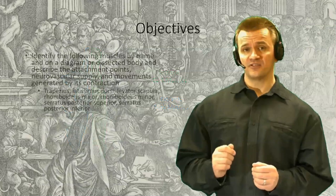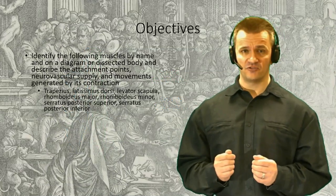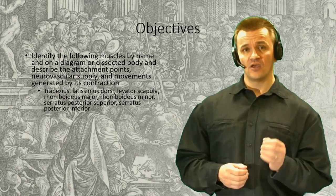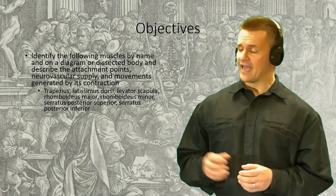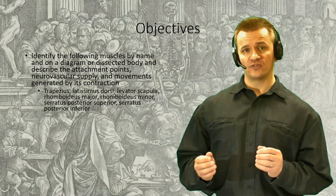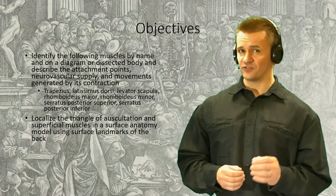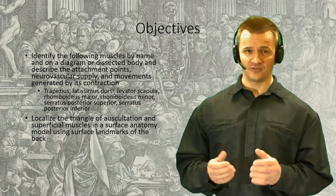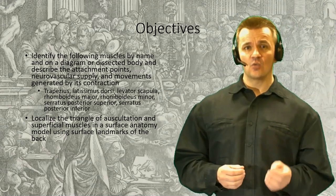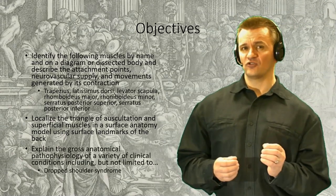On the completion of this session, you should be able to recall the names of the extrinsic back muscles and identify them in a picture or a dissection, and describe their origin, insertion, their neurovascular supply, and the movements that they generate during contraction. You should also be able to use surface landmarks to localize these muscles under the skin. This is a critical skill in diagnosis of musculoskeletal conditions and of manual massage therapy techniques. Finally, we'll look at a few clinically related conditions, including something known as drop shoulder syndrome.